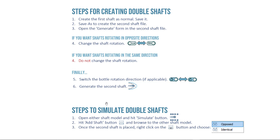For running a simulation with both shafts and their bottles together, there are simple tools in the simulation as well. All you need to do is open either the left-hand or right-hand shaft model and hit the simulate button as usual. Inside the simulation, hit the add shaft button in the form and go find the other shaft model to import it. Once the second shaft is placed, right-click that button and choose whether you've got opposed or identical rotation direction — picking the wrong one will give incorrect bottle movement. This is very straightforward in version 5 of the app.